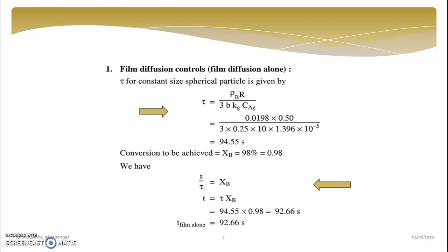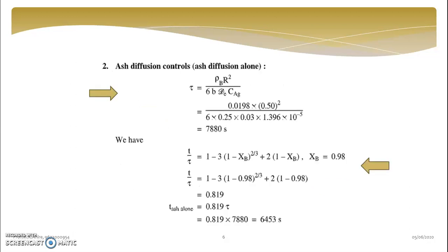So we have just compared that which resistance is more. So from this value 7880, it is sure that ash resistance, ash layer resistance is providing more resistance for conversion of the particle.